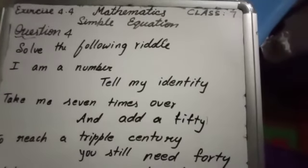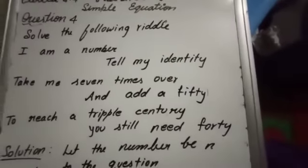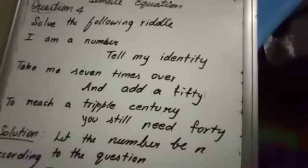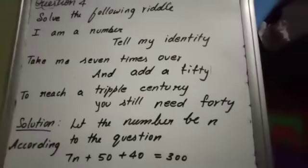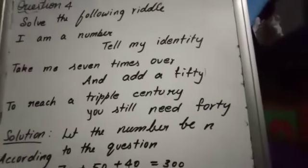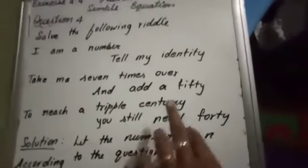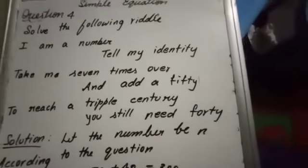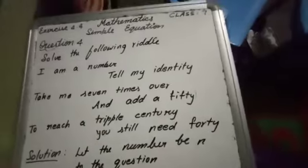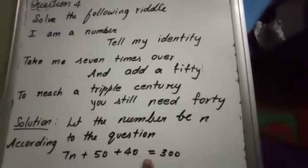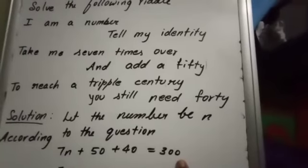So let us see the solution. Let the number be n. According to the question, 7 times the number which we don't know, that is 7n, plus 50 - add a 50. Then to become a triple century we require 40. So 7n plus 50 plus 40 is equal to 300.